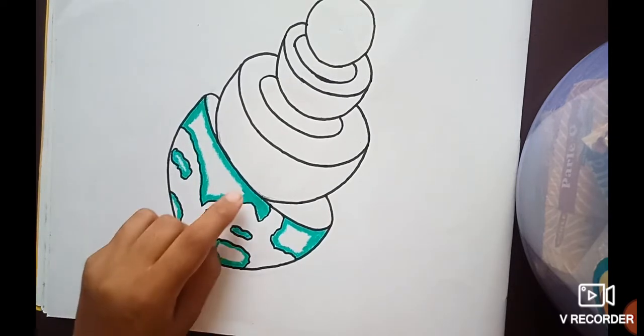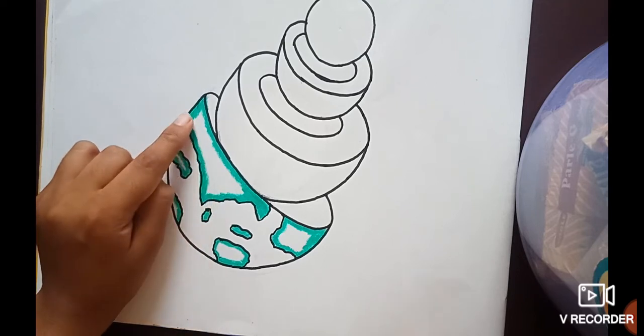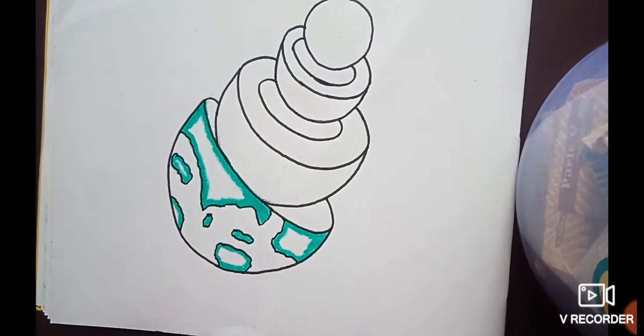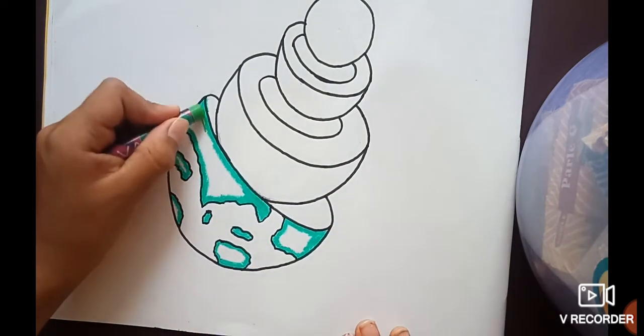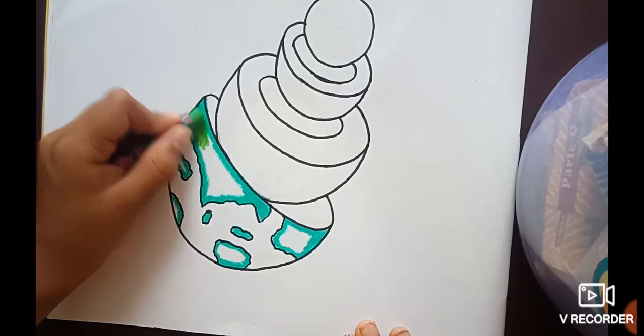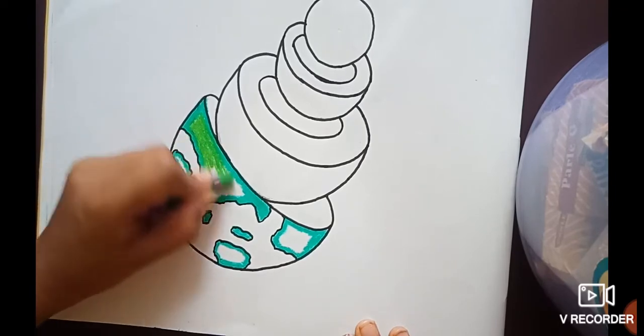Outline it and then outline the continents of the crust with darker green color. And then what you need to do is take light green color and fill those in with that light green color.